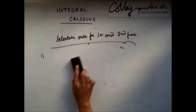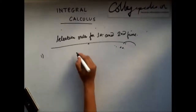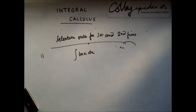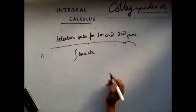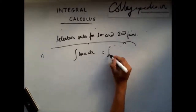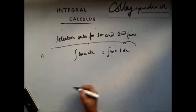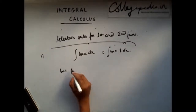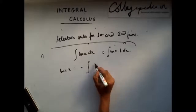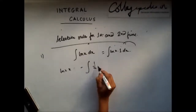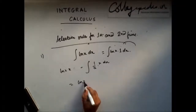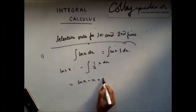Now let's take another problem pertaining to this second rule: integrate ln x dx. Again, in this case, I'll take ln x as my first function and 1 as my second function. Integrating by parts: the differentiation of ln x is 1/x, and the integration of 1 is x dx. So the answer is x ln x minus x plus some constant C.